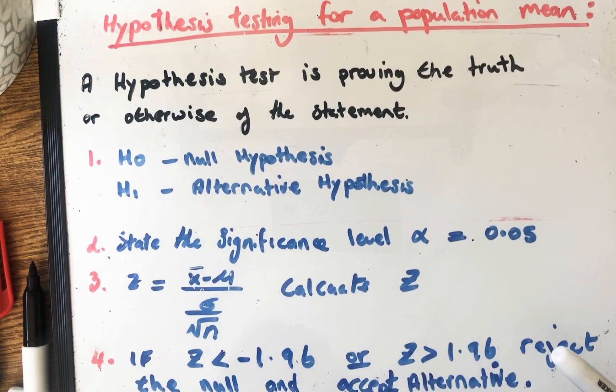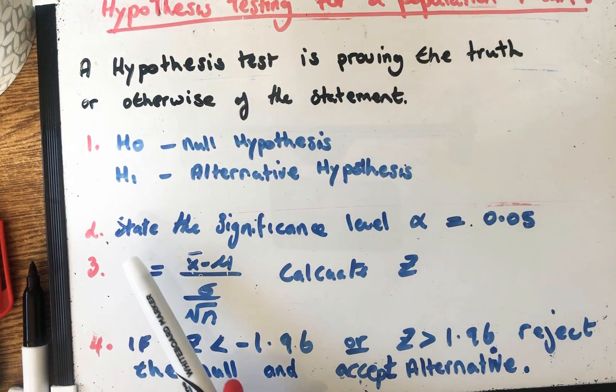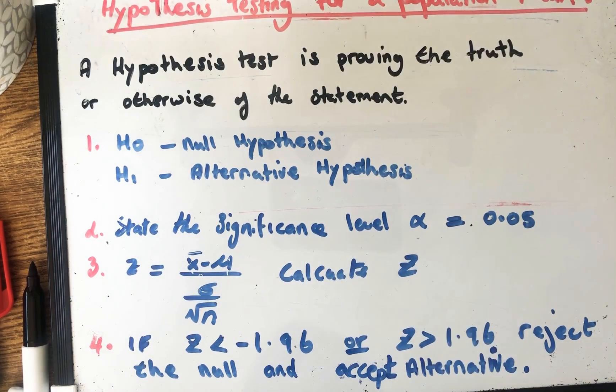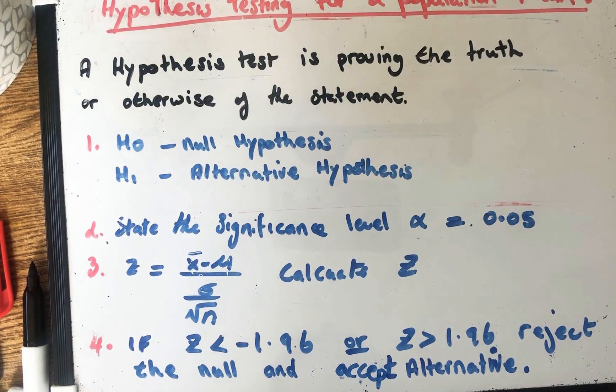So part two then you state the significance level which is 0.05. Now you do not need to worry about this step because in your Leaving Cert exam alpha is always in the question and they say to you it's 5%. However you actually don't do anything with this 5%. It's just within the question.